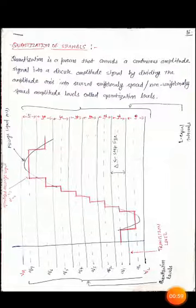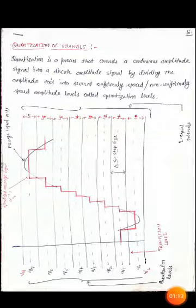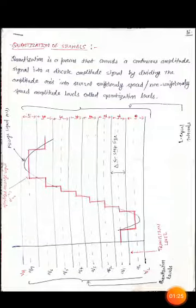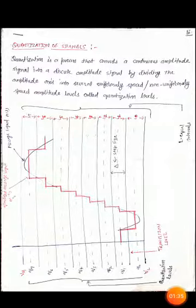In quantization, we divide that continuous amplitude signal into a number of amplitude levels — discrete amplitude levels. So quantization is a process that converts a continuous amplitude signal into a discrete amplitude signal by dividing the amplitude axis into several uniformly spaced or non-uniformly spaced amplitude levels. In this diagram, in the vertical direction, the solid lines indicate transition levels noted by L0, L1 up to L7.